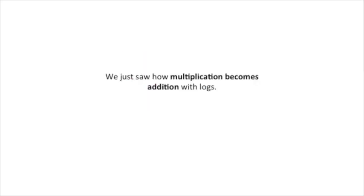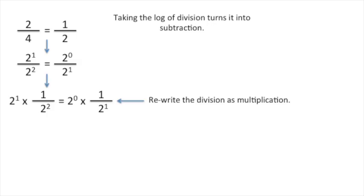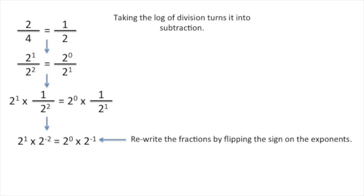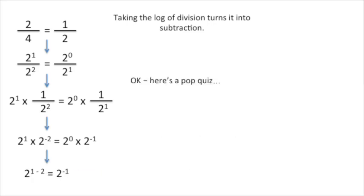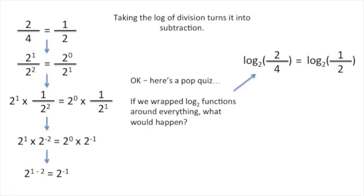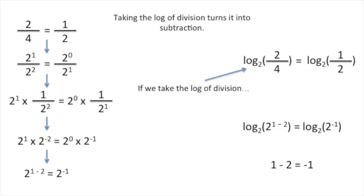We just saw how multiplication becomes addition with logs. Now let's see how division becomes subtraction. We'll start with normal division — rewrite everything as powers of 2, rewrite the division as multiplication, flip the sign on the exponents for the fractions, and subtract the exponents. If we wrap log base 2 functions around everything, we isolate the exponents. Thus, the log base 2 of 2 divided by 4 is just 1 minus 2, or negative 1. If we take the log of division, we end up with subtraction.